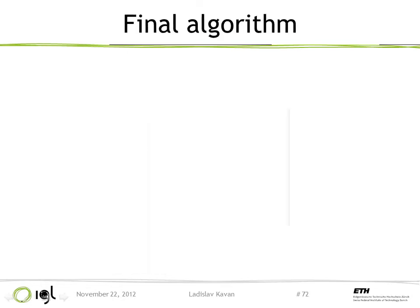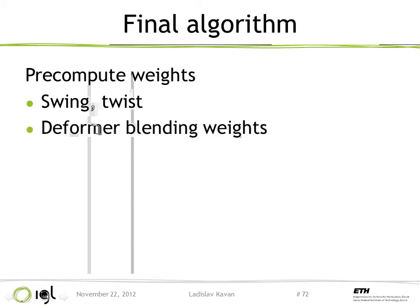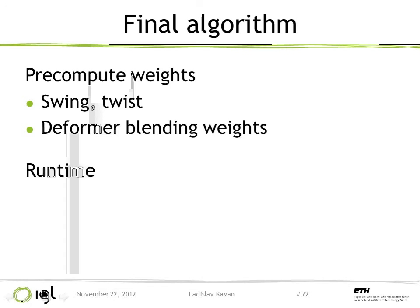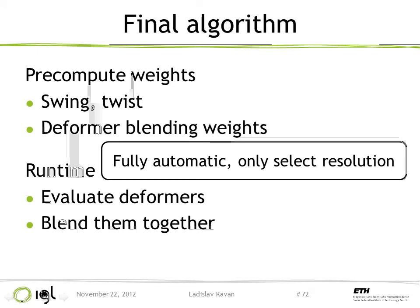To summarize the final algorithm: we start by establishing a voxel grid and then pre-compute the weights — first the swing and twist weights as just explained, and then the deformer blending weights, which are point-wise bounded biharmonic weights centered at joints. At runtime, we evaluate all joint-based deformers — in our case the swing-twist deformer — and blend the results together using the pre-computed deformer blending weights. Importantly, no manual intervention is needed other than picking the resolution of the voxel grid.